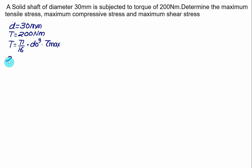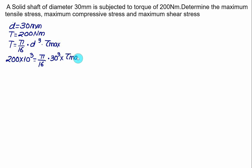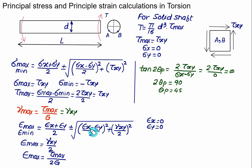Substituting: 200 × 10³ = (π/16) × 30³ × τ_max. Solving, τ_max = τ_xy ≈ 37.726 MPa. Therefore σ_max = +τ_xy = 37.726 MPa (maximum tensile stress), σ_min = −τ_xy = −37.726 MPa (maximum compressive stress), and the maximum shear stress = τ_xy = 37.726 MPa.